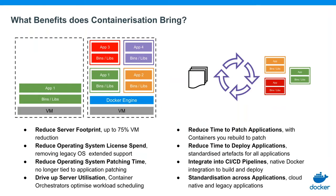So what benefits does containerization bring? Looking at infrastructure first: traditionally, the way we've always deployed software — even back on physical servers prior to virtualization — you deployed one application per host. One application per physical server, then one application per virtual server. With containerization, because we're able to securely package and isolate each application, we're able to run more applications per host. This diagram shows four applications on a single virtual machine, but in the wild we see people run an awful lot more. The first benefit is a consolidation of infrastructure.